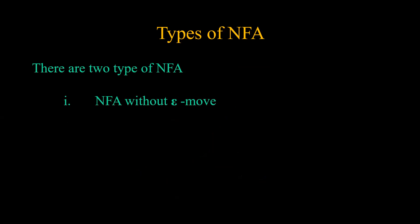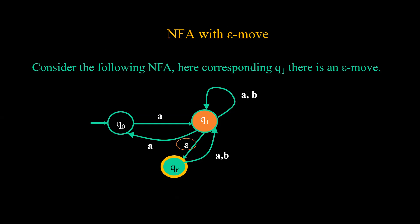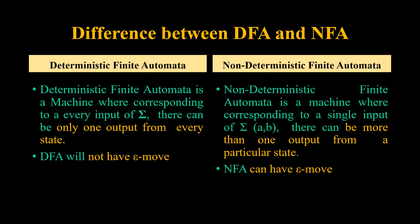Non-deterministic finite automata can further be divided into two types: NFA with epsilon and NFA without epsilon. In NFA with epsilon, there is an epsilon move along with one or more regular moves from a given state. The key differences are: in DFA, corresponding to every input there is only one output from every state, whereas in NFA we can have more than one output from a particular state. Most importantly, DFA will not have any epsilon move, whereas NFA can have epsilon moves.